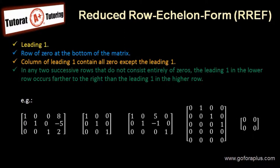So what is reduced row echelon form? There are four points to show this RREF. Just like row echelon form, we need to have leading one, row of zero at the bottom of the matrix, and any two successive rows that do not consist entirely of zeros, the leading one in the lower row occurs farther to the right than the leading one in the higher row. The only difference between RREF and REF is this: column of leading one contains all zeros except the leading one. Now what does it mean?